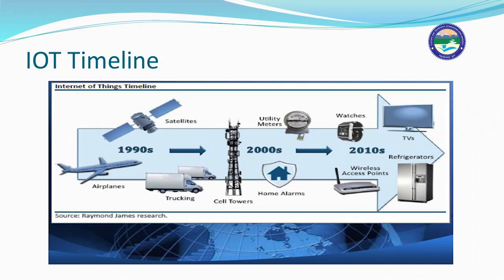This is the IoT timeline. As I mentioned, starting from the 1990s, the IoT concept was used in airplanes and satellites. Decade by decade it progressed and grew, and today we can see several smart devices being used in day-to-day home life, all of which are IoT-based.